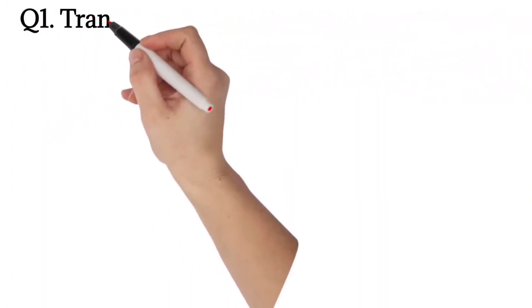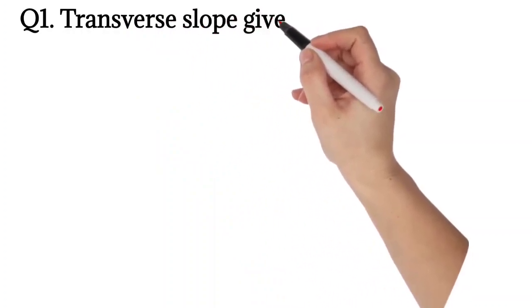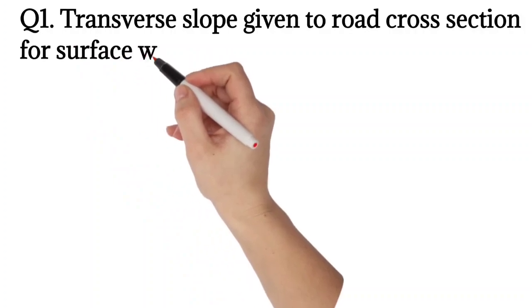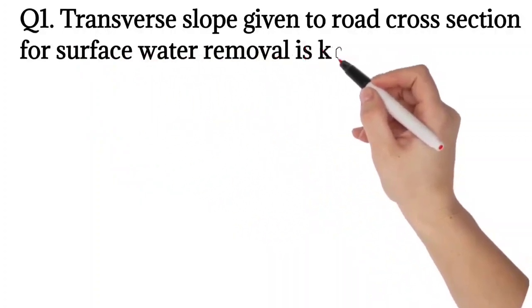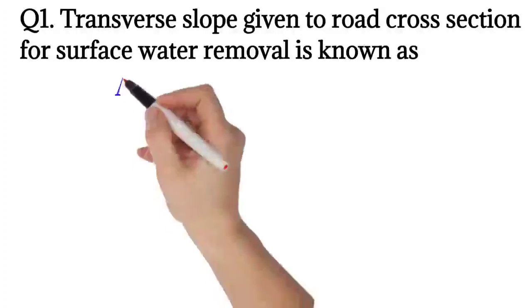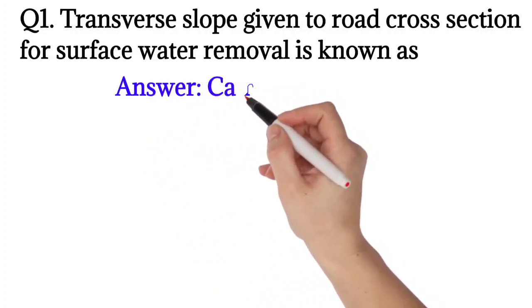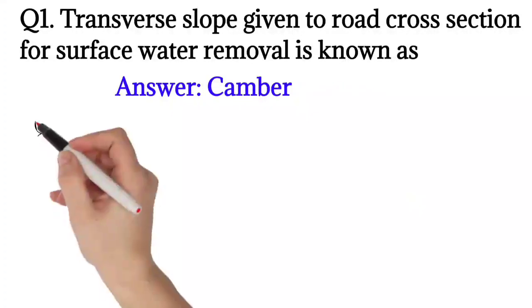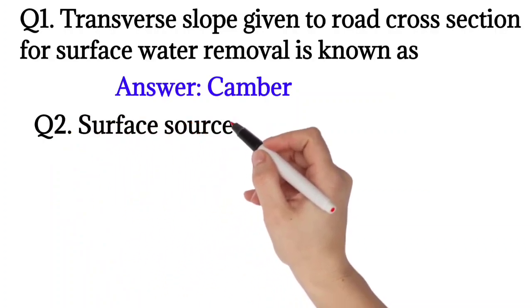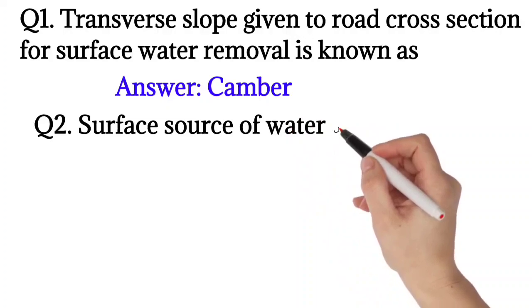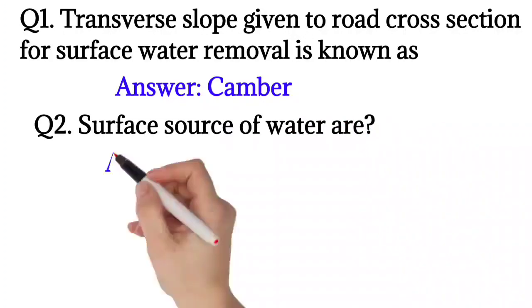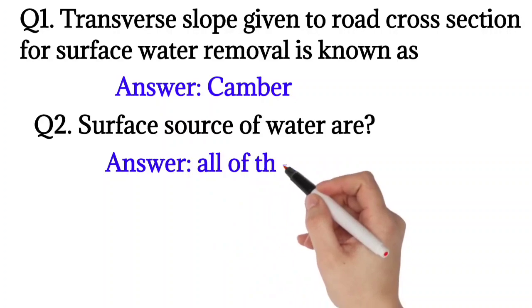Question number one: the transverse slope given to a road cross-section for surface water removal is known as camber. So the answer is camber.